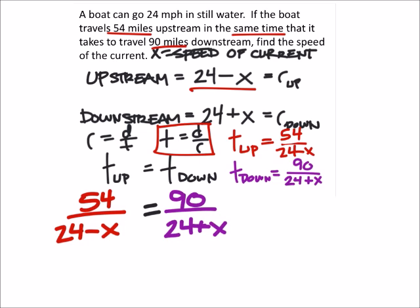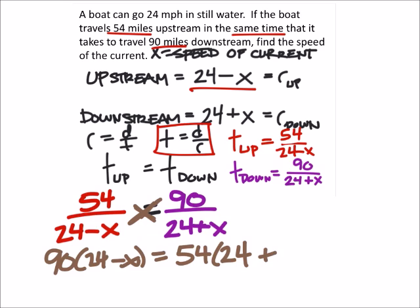Okay, well from here, again, you could use common denominators or cross-multiplication. Well, on this one, cross-multiplication is going to give us the same thing as finding common denominators. So I'm going to cross-multiply. I've got 90 times 24 minus x, and this should equal 54 times 24 plus x.